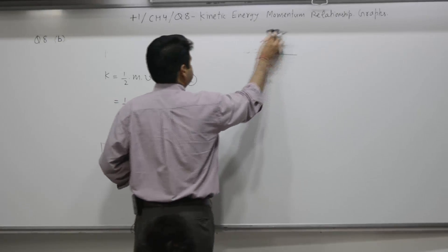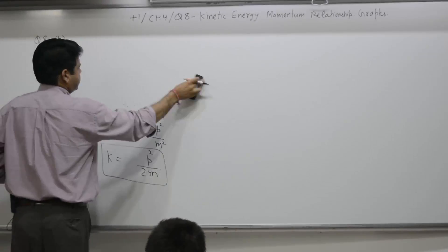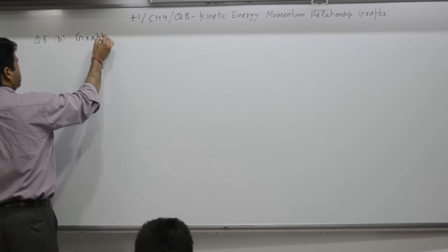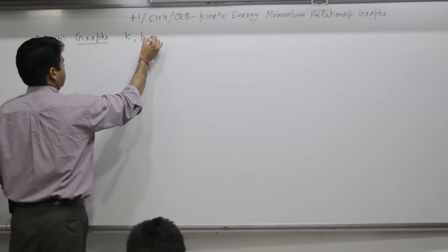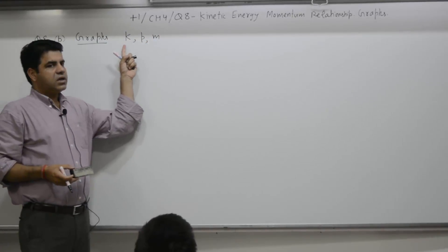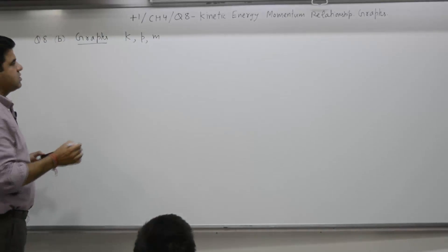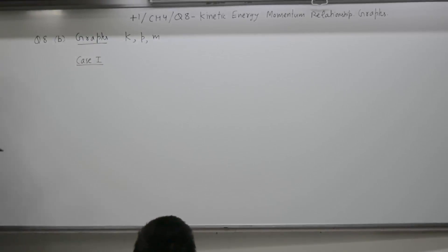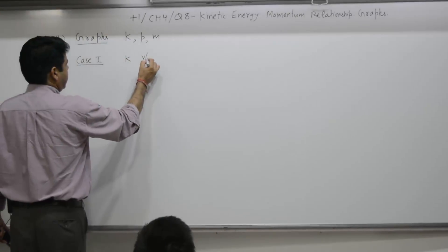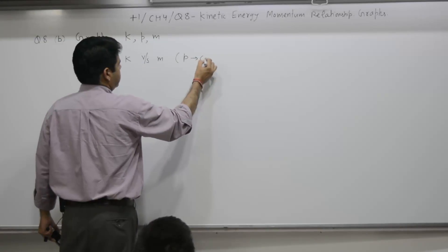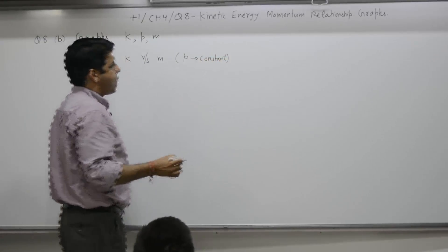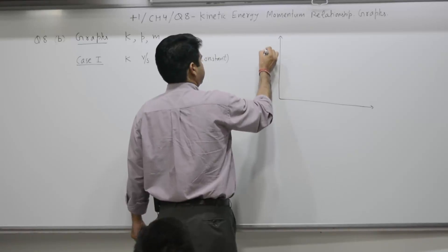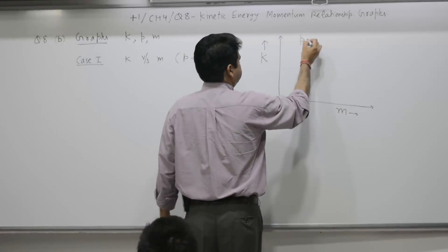The second part deals with graphs. We have three parameters: K, p, and m. We need to plot graphs between two parameters keeping the third parameter constant. The first case is a graph between K and m — kinetic energy as a function of mass, keeping momentum p constant.